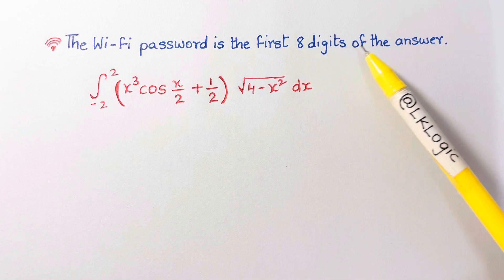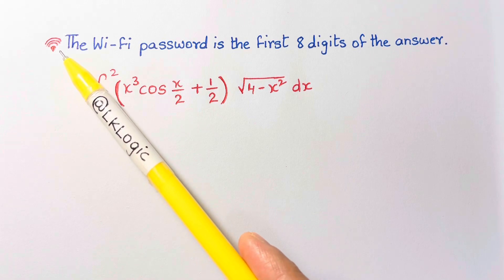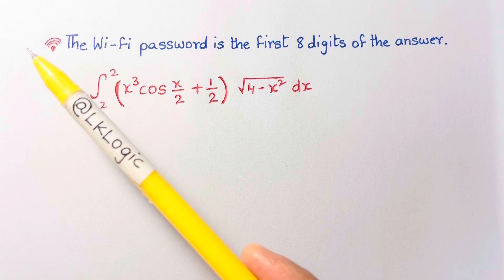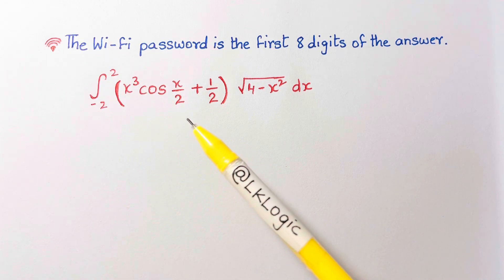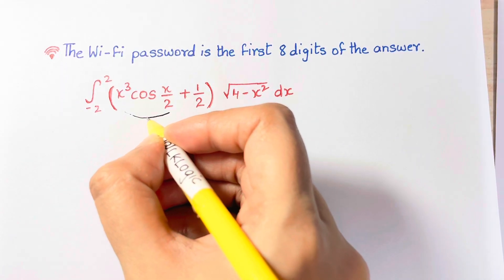The Wi-Fi password is the first eight digits of the answer. Now you can't use the internet to solve this problem because you're trying to get the Wi-Fi password, and you're also not allowed to use calculators. Can you figure it out? Give this problem a try. When you're ready, keep watching the video for a solution.